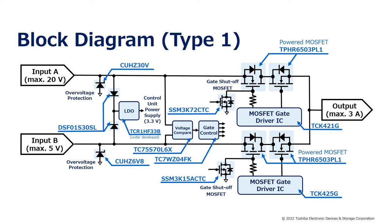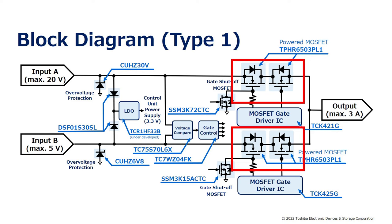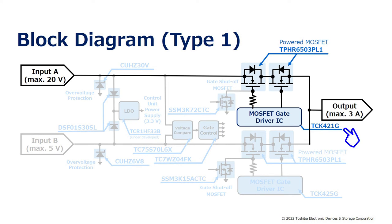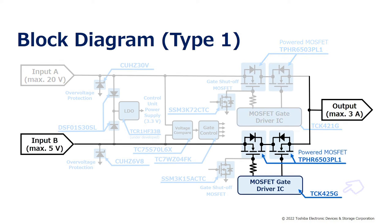The block diagram of one of the power multiplexers — for example, type 1 — is shown here. A pair of power MOSFET ICs connected in common drain configuration is used for the switching operation of each input A and input B. TCK421G is the gate driver of the MOSFET for the A side input switch, supporting input voltage up to 20 volts with a gate drive voltage of 10 volts. TCK425G is the gate driver of the MOSFET for the B side input switch, supporting input voltage up to 5 volts with a gate drive voltage of 5.6 volts.